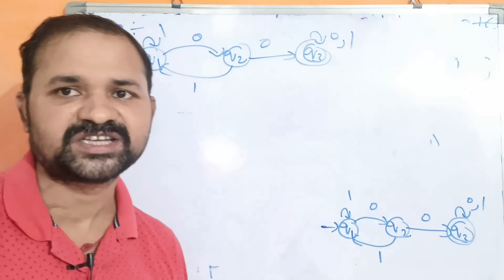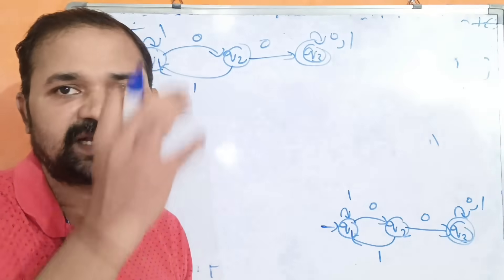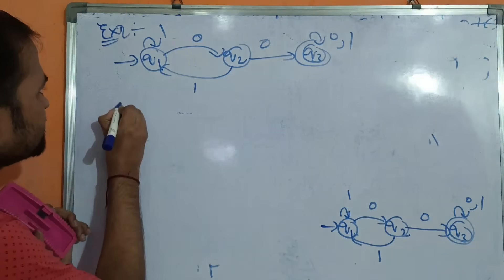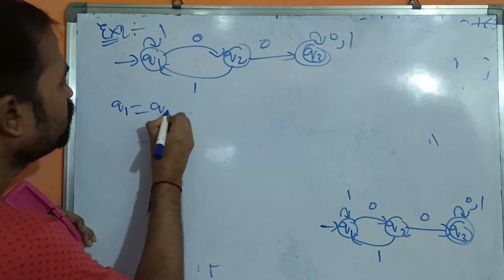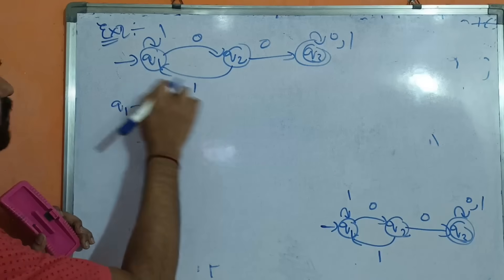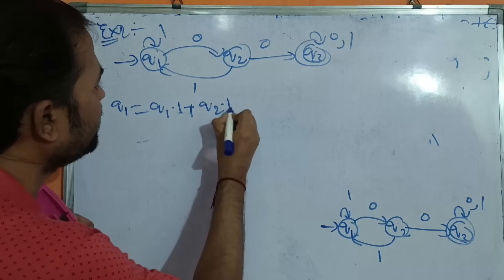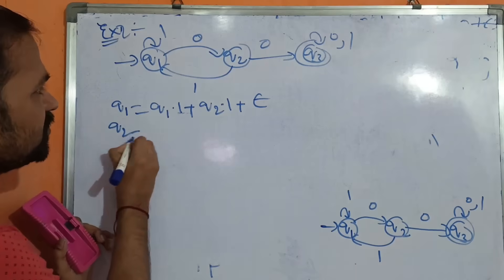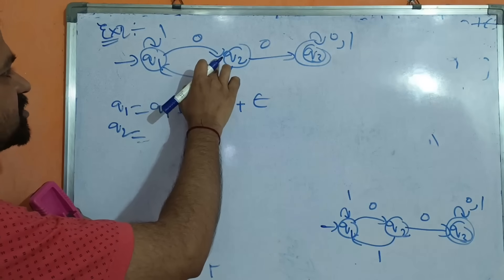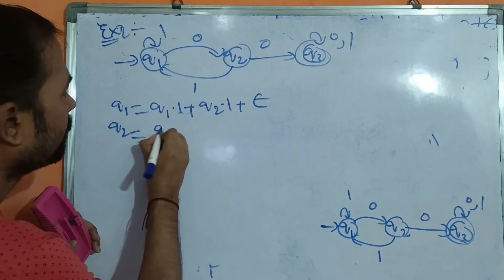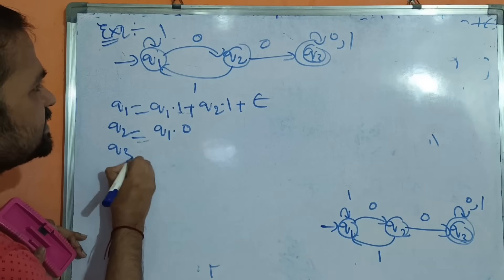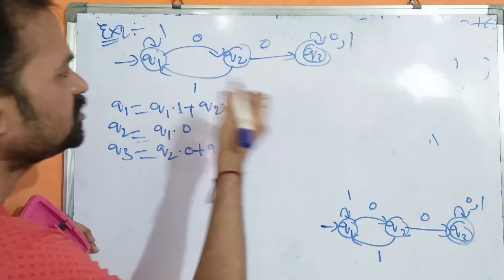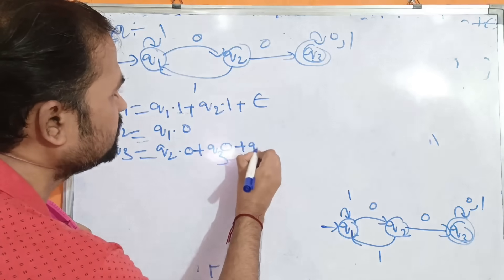Let us write the state equations for Example 2. Q1 = Q1·1 + Q2·1 + ε, since Q1 is the initial state. Q2 = Q1·0, since Q2 has one incoming edge from Q1 on 0. Q3 = Q2·0 + Q3·0 + Q3·1, which can be written as Q3 = Q2·0 + Q3·(0+1). Q3 is the final state, so we need to solve the Q3 state equation.